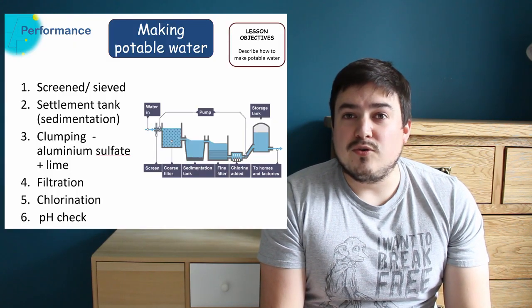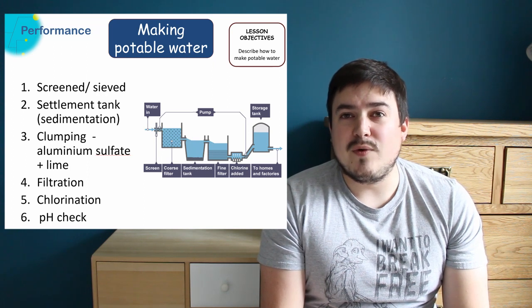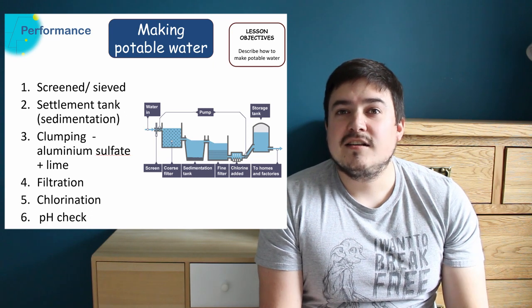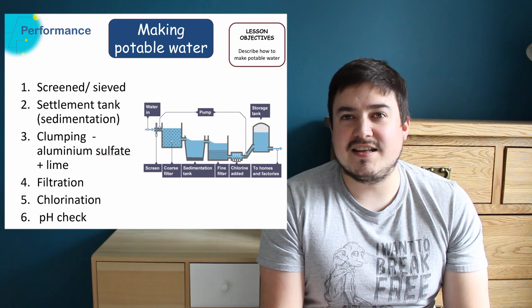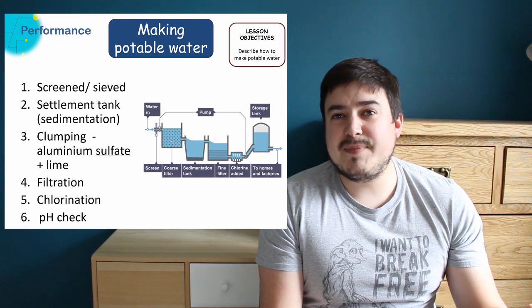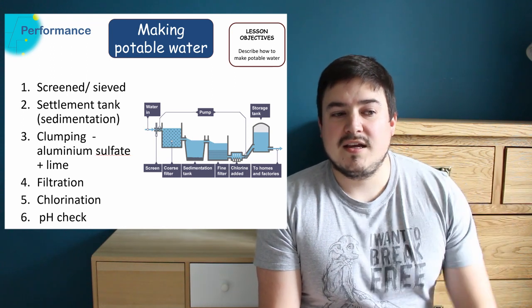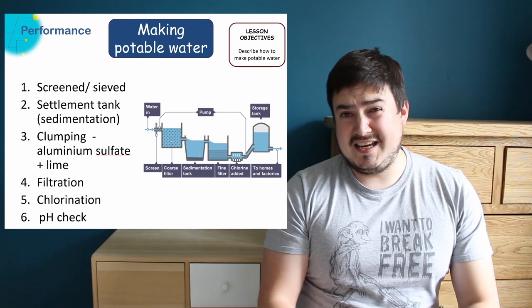When we're dealing with the ground water and the sewage water, the waste water, we need to make sure that we first of all screen it, which means we sieve the water to remove large impurities that are found in the water. Once it's been sieved, it's then placed into a settlement tank where we add to it some aluminium sulphate and lime, which clumps those things together.